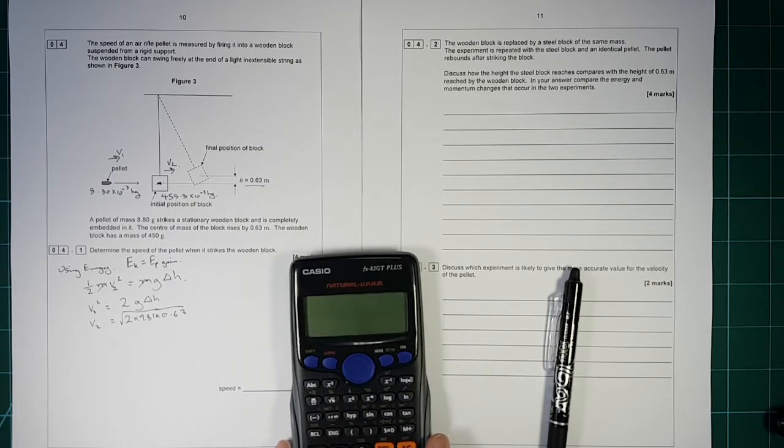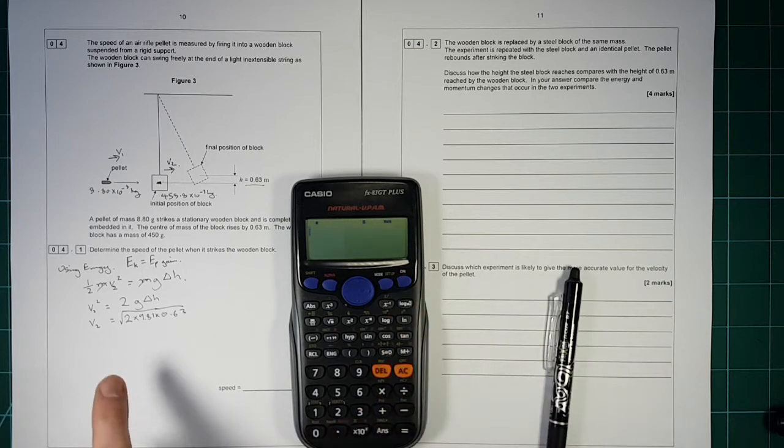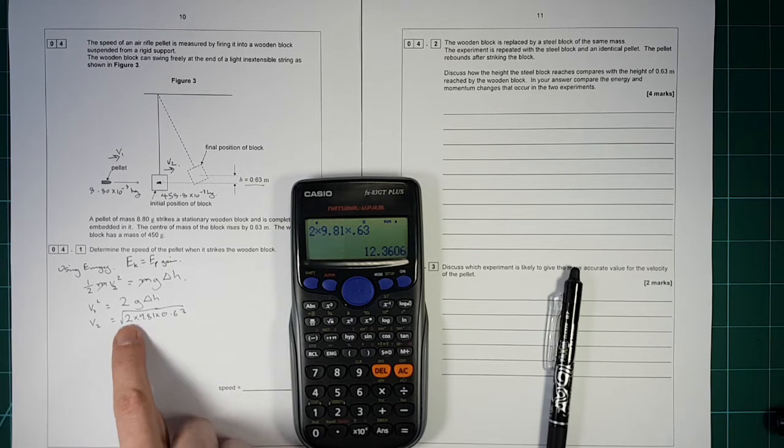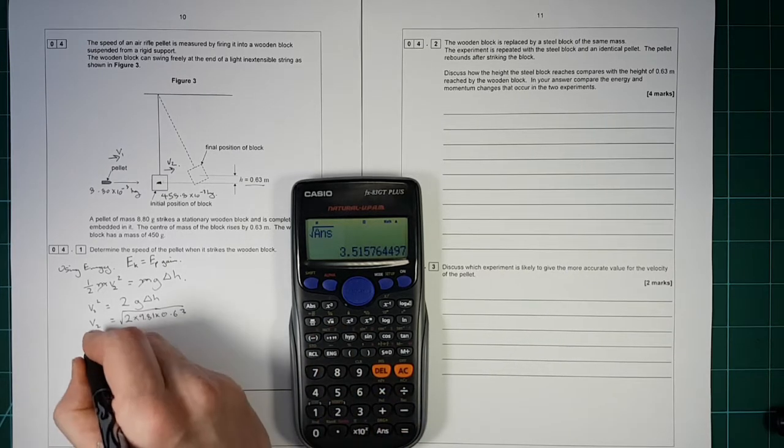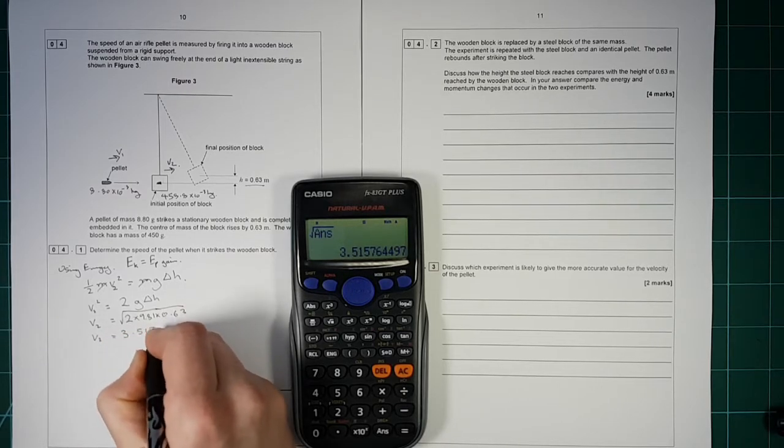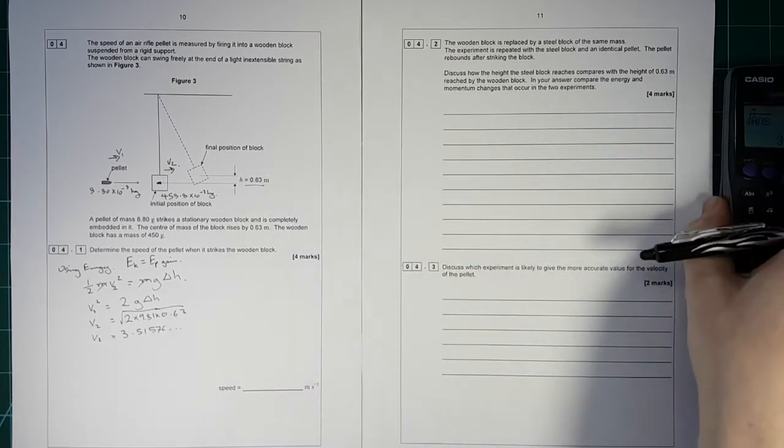Okay. So let's put the calculator into shot there. And we'll do this calculation. So we've got 2 times by 9.81 times by 0.63. So that's that bit. Square root that. And we get v2 is equal to 3.51576 dot dot dot. So we'll save that answer for a moment.